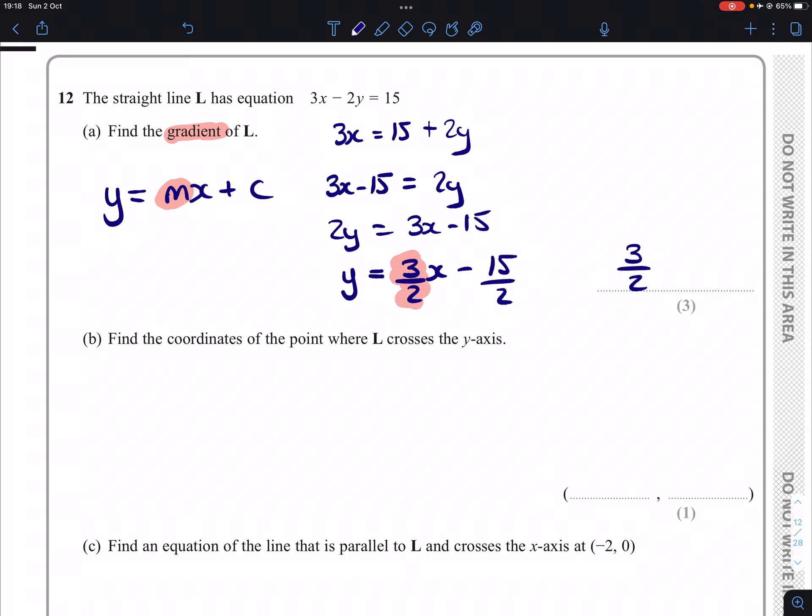Which could also be written as 1.5, but technically 3/2 has more utility. Writing gradients as fractions is more useful in the long run.